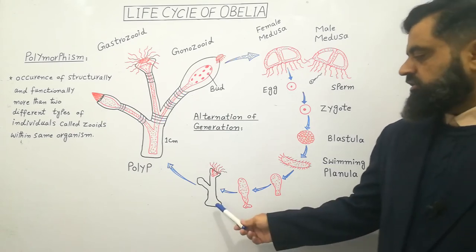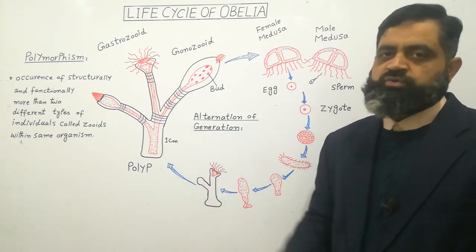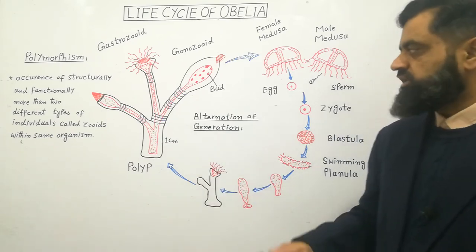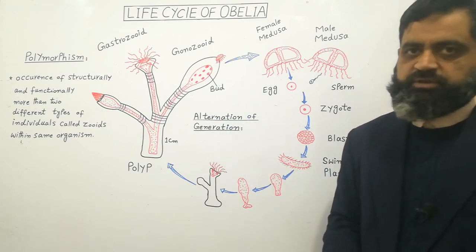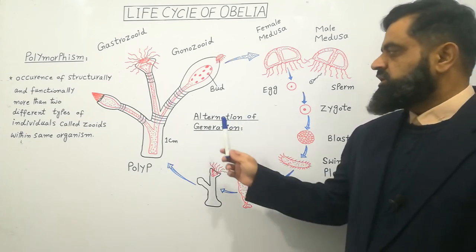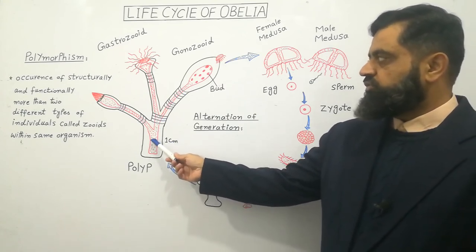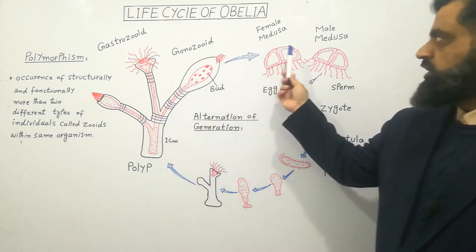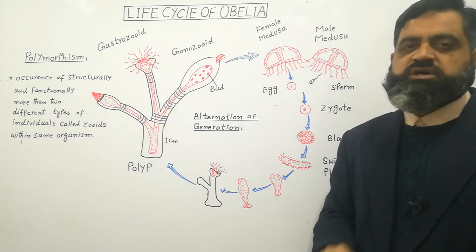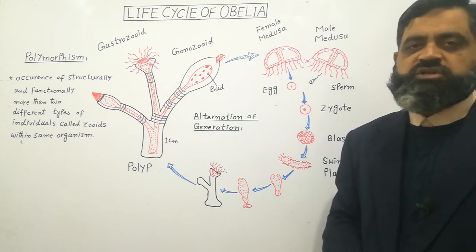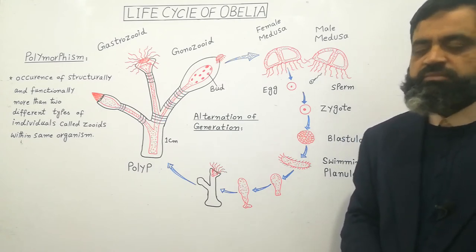The Planula larva attaches to a substratum and develops into a new polyp form of Obelia. This Obelia starts to develop into a new colony. In this way, there is an alternation of generation in this animal — the polyp form gave rise to Medusa and Medusa gave rise to polyp form.